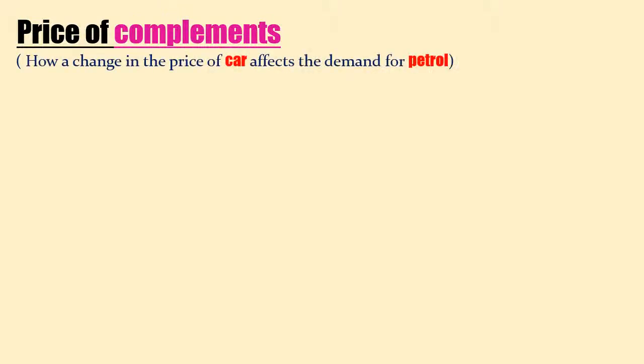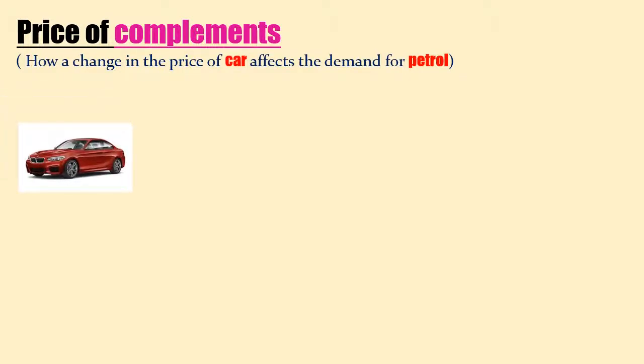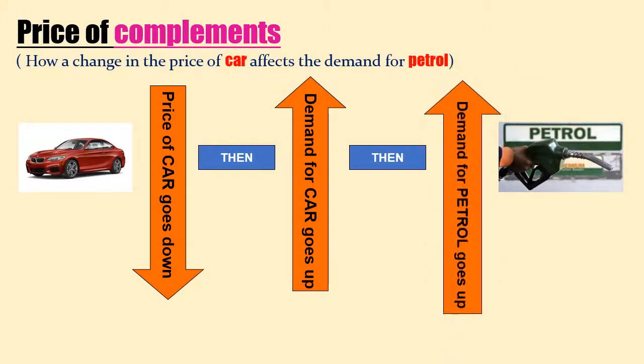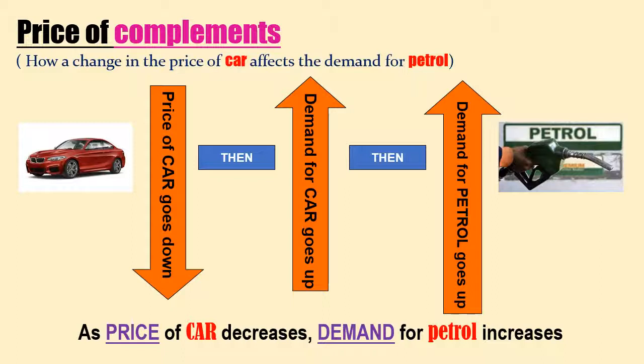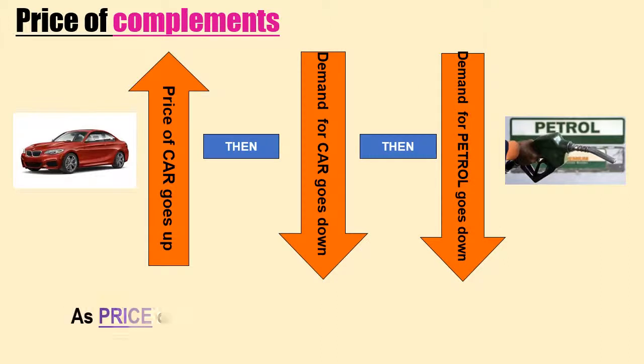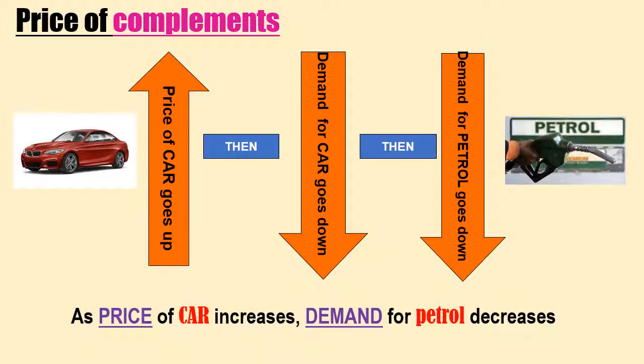Now let us see how a change in the price of complementary goods affects demand — specifically, how a change in the price of a car affects demand for petrol, assuming petrol's price remains constant. As the price of car goes down, demand for car goes up, and as a result, demand for petrol also goes up. Conversely, as the price of car goes up, demand for car goes down, and demand for petrol also goes down. Therefore, price of car and demand for petrol move in the same direction.